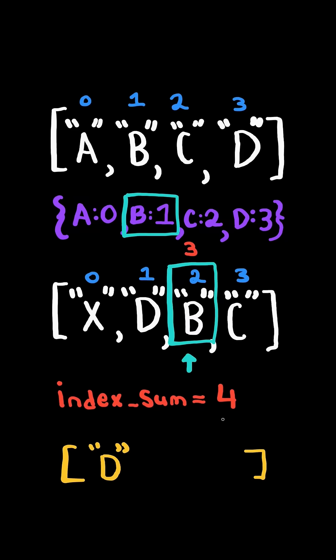Again, the string exists in the map and its index sum is less than the current. So we update the index sum and overwrite the list with the new string.